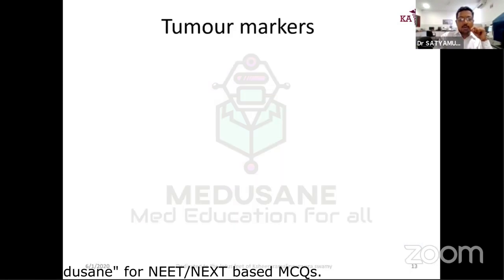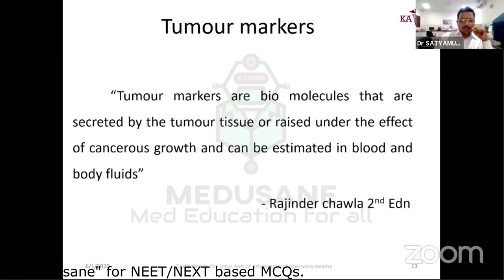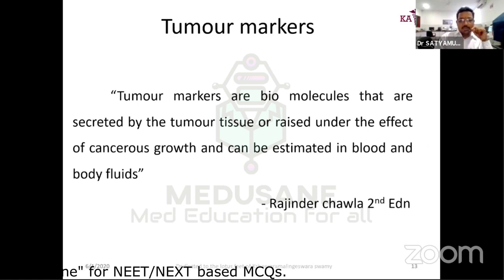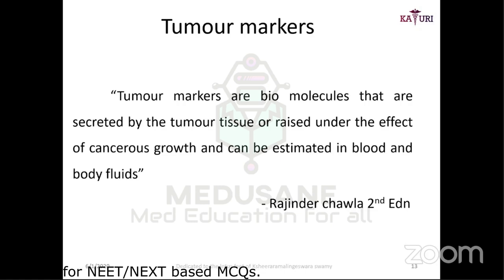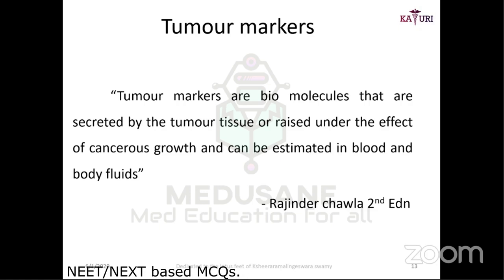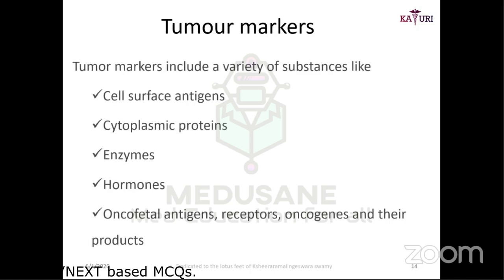Tumor markers are biomolecules that are elevated in blood or body fluids due to tumor tissue activity. Types include surface antigens, enzymes, hormones, oncofetal antigens, and receptors. Any biomolecule related to the tumor can serve as a tumor marker.